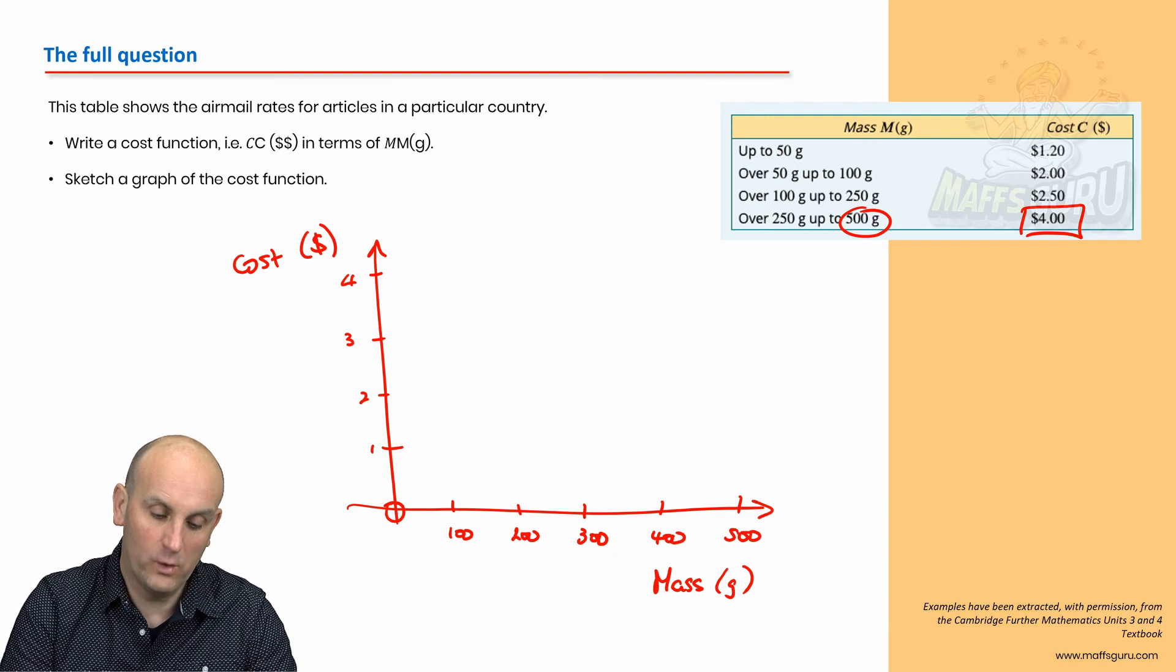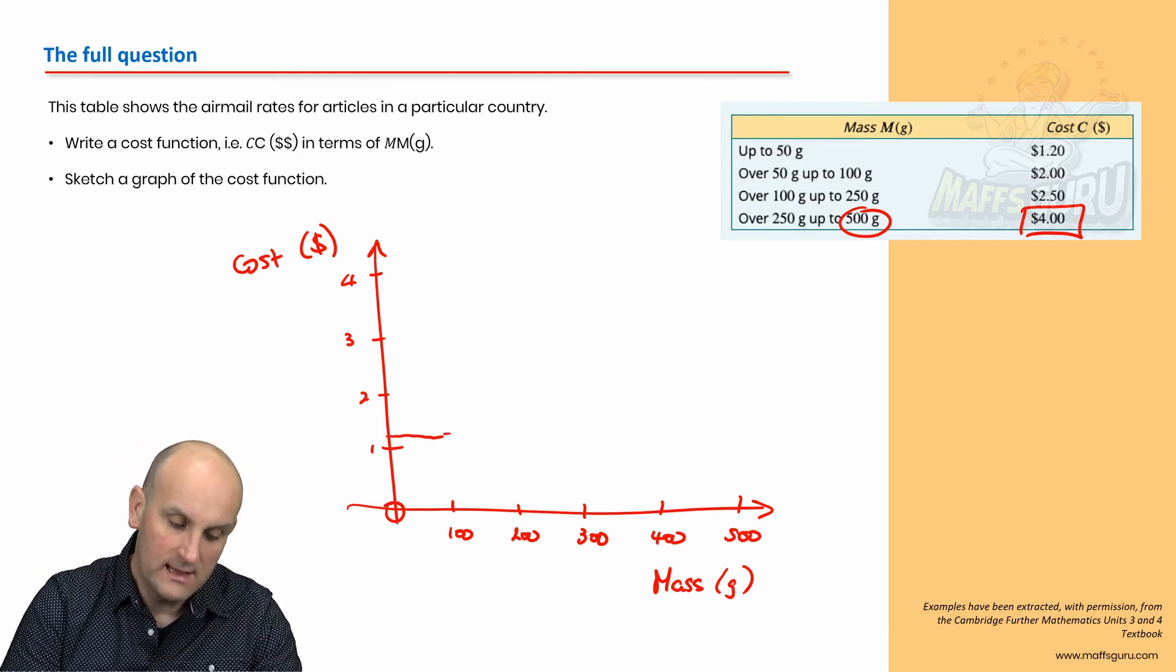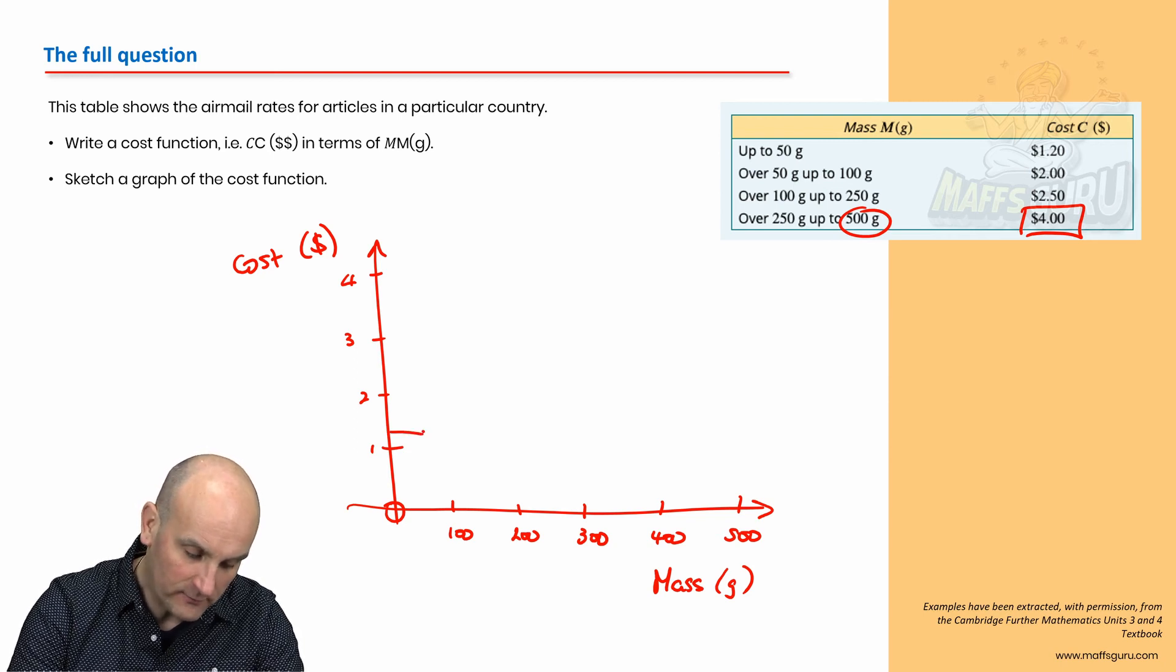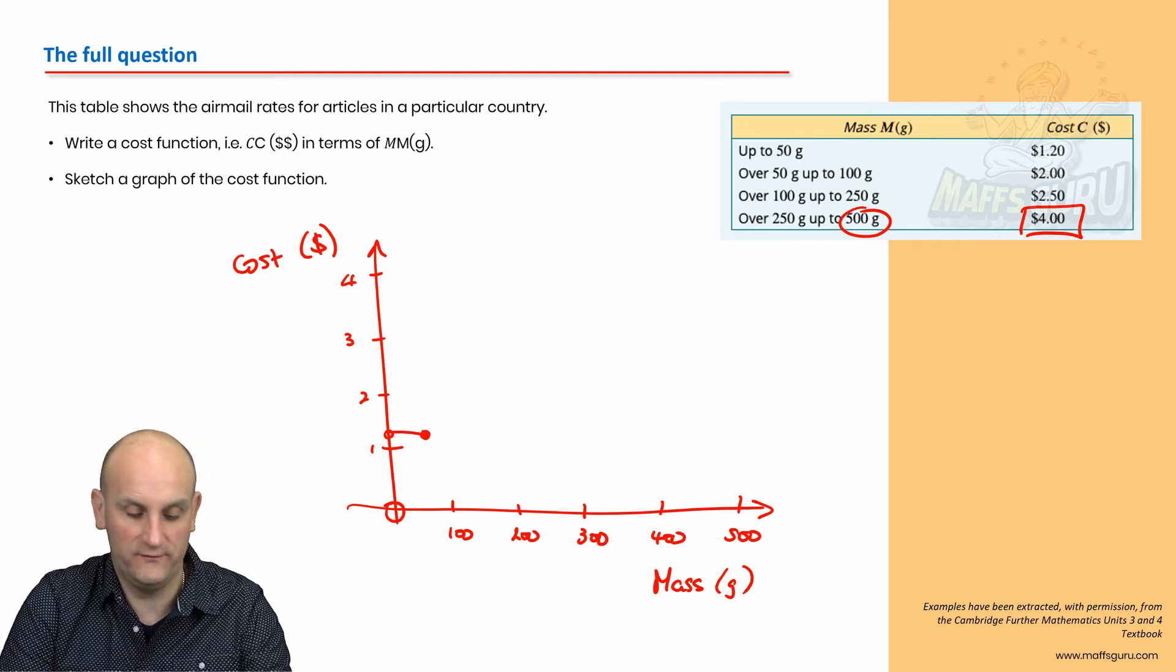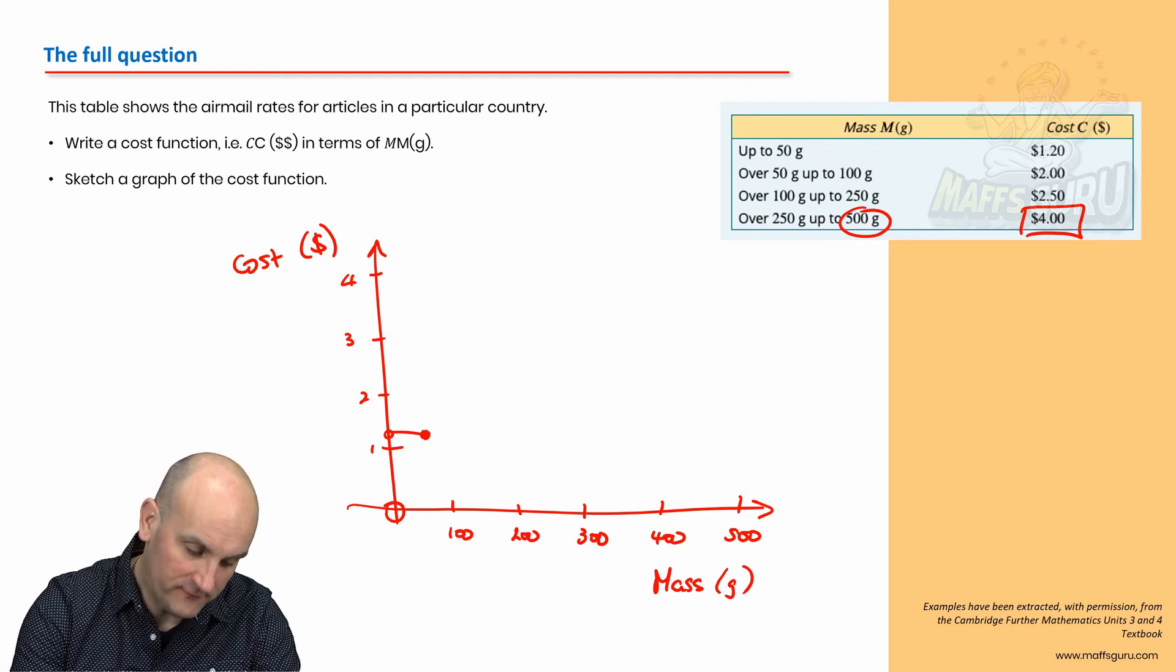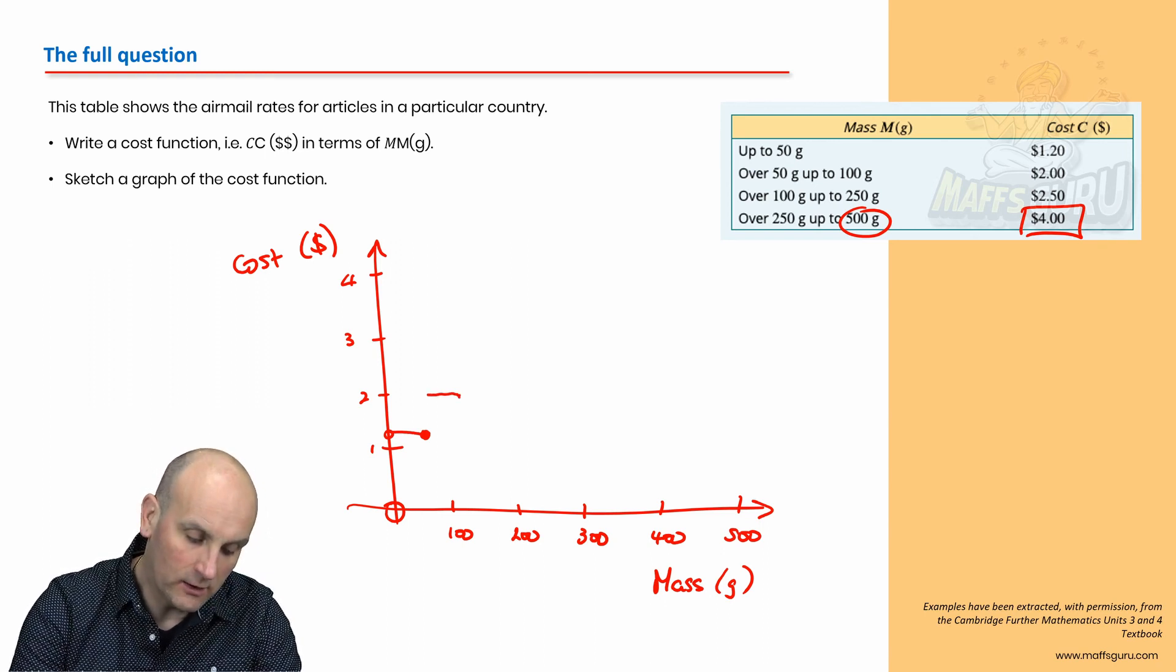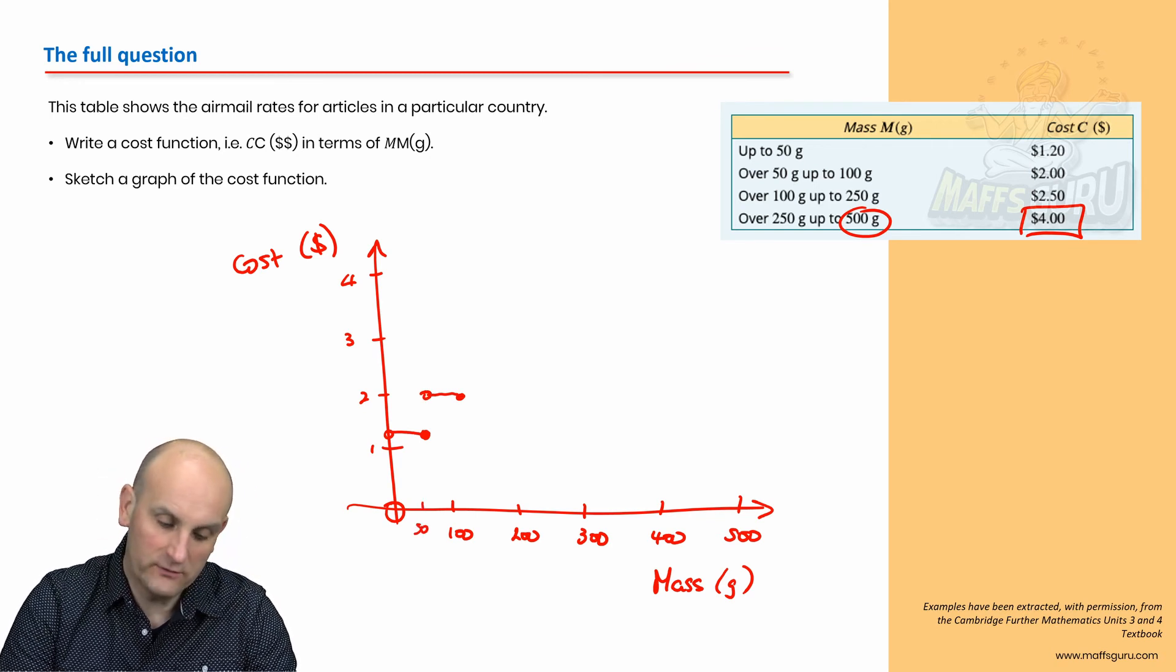Now, I know I've already got the graph. But, again, just showing you how I draw it. Up to 50 grams is $1.20. So, I'm now going to draw a horizontal line there and up to 50 grams. So, I'm sorry, up to 50 grams. That's too long. So, up to 50 grams is here. So, I drew a short line there. It's going to have a closed circle there and an open circle there. Because, it's going to include the 50 grams. 50 to 100 grams is going to give me $2.00. So, 50 to 100 grams is $2.00. So, again, including an open circle. So, that's my 50 grams there.